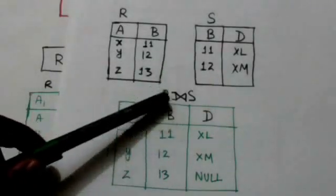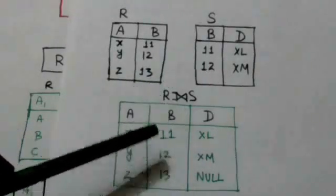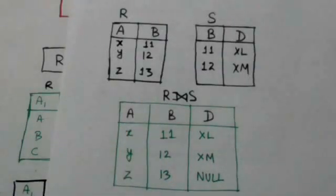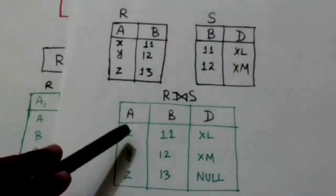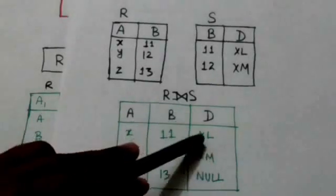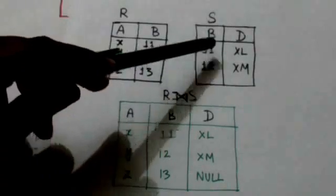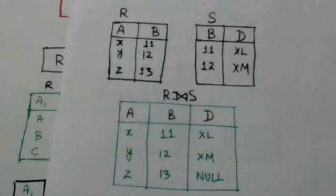Suppose this is relation R and this is relation S. The result of this left outer join operation is this relation. This resulting relation contains all tuples of relation R. This tuple of the resulting relation is formed by combining the tuple of relation R with the tuple of relation S having the same value of attribute B, and then removing duplicate attributes.